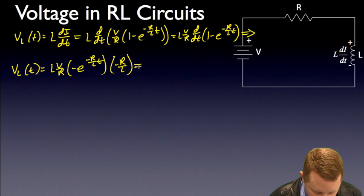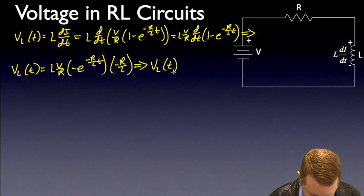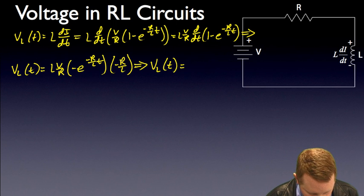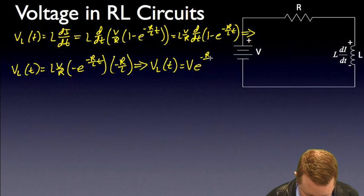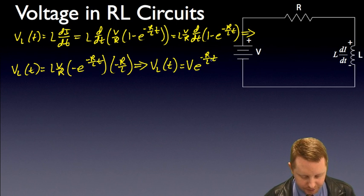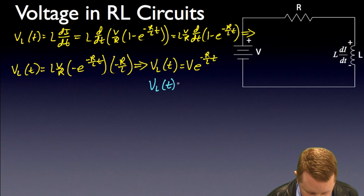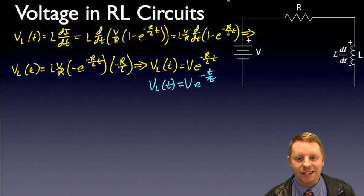With just a little bit of rearrangement, the negatives cancel out, R on top and R on the bottom cancel, L on top and L on the bottom cancel, and I just get the battery's voltage V times e to the minus R/L times t. Or in terms of tau, we could write this as VL(t) equals V times e to the minus t over tau. Again, still following that same basic form.